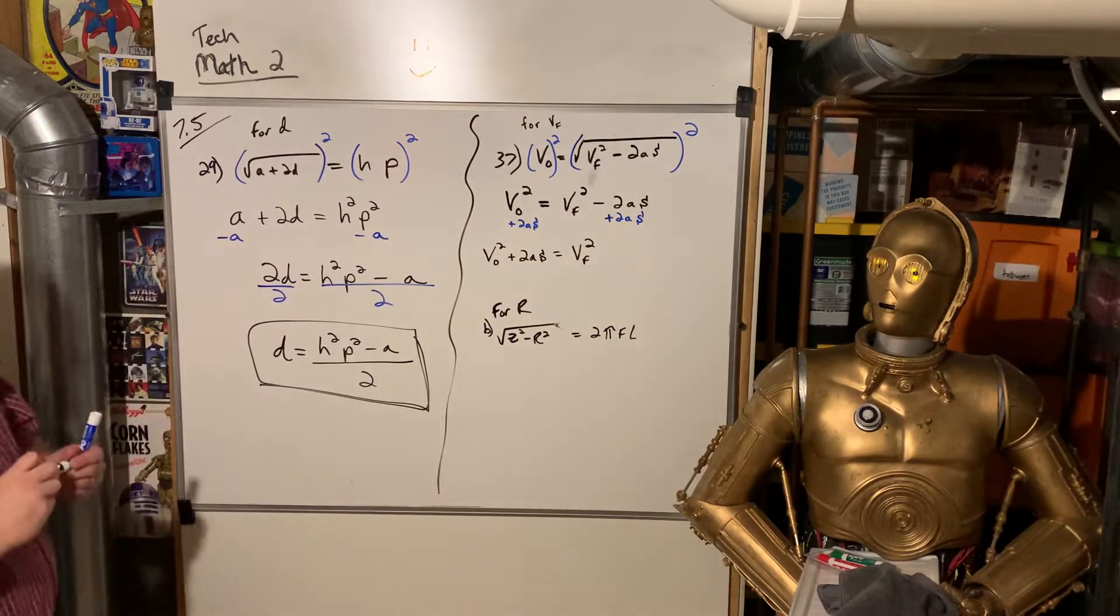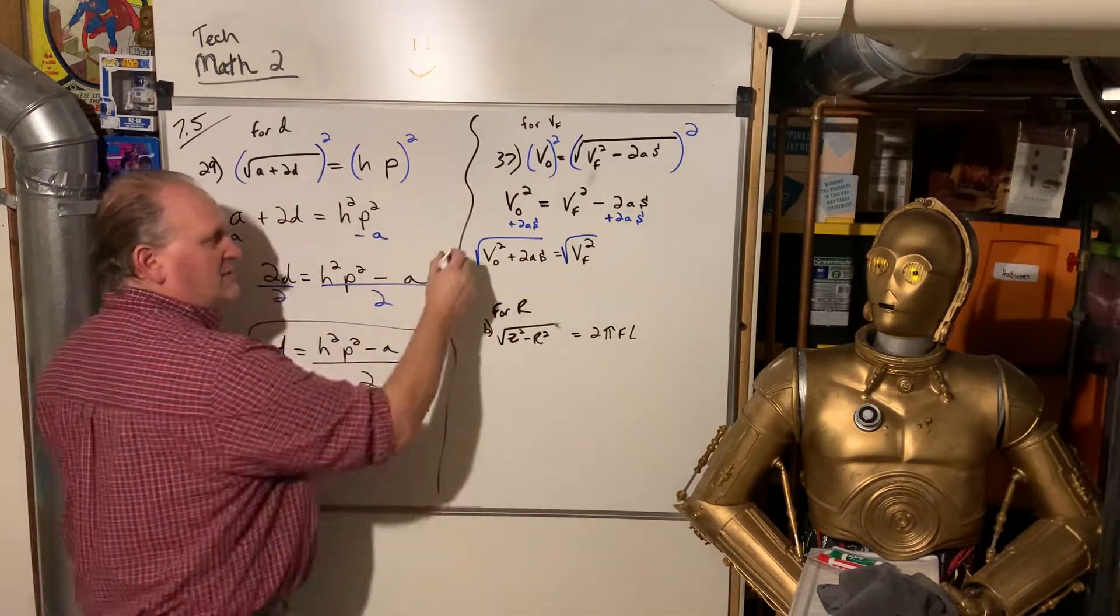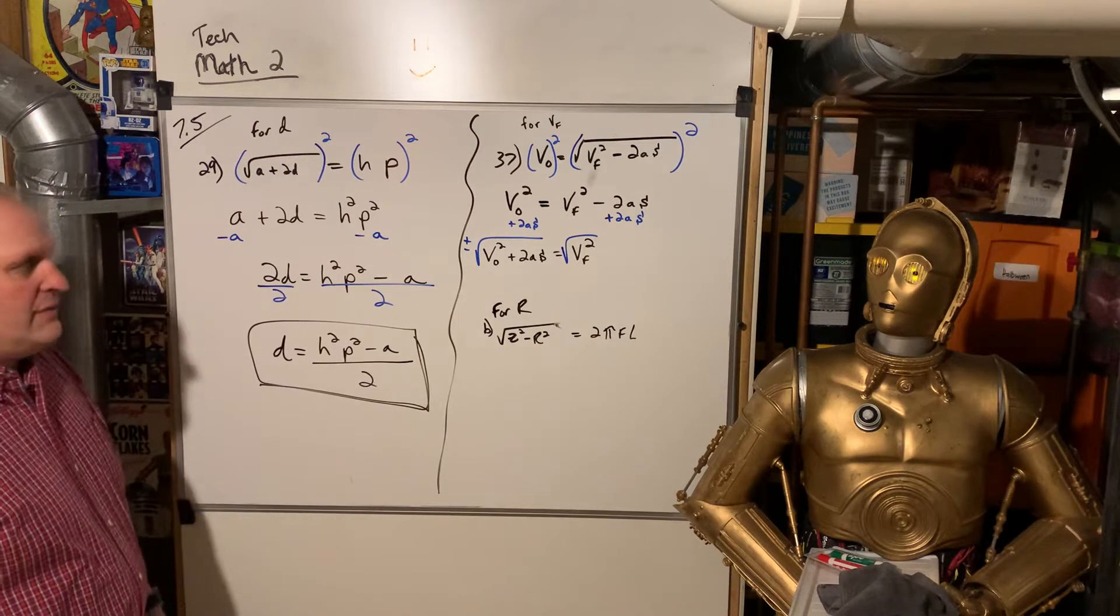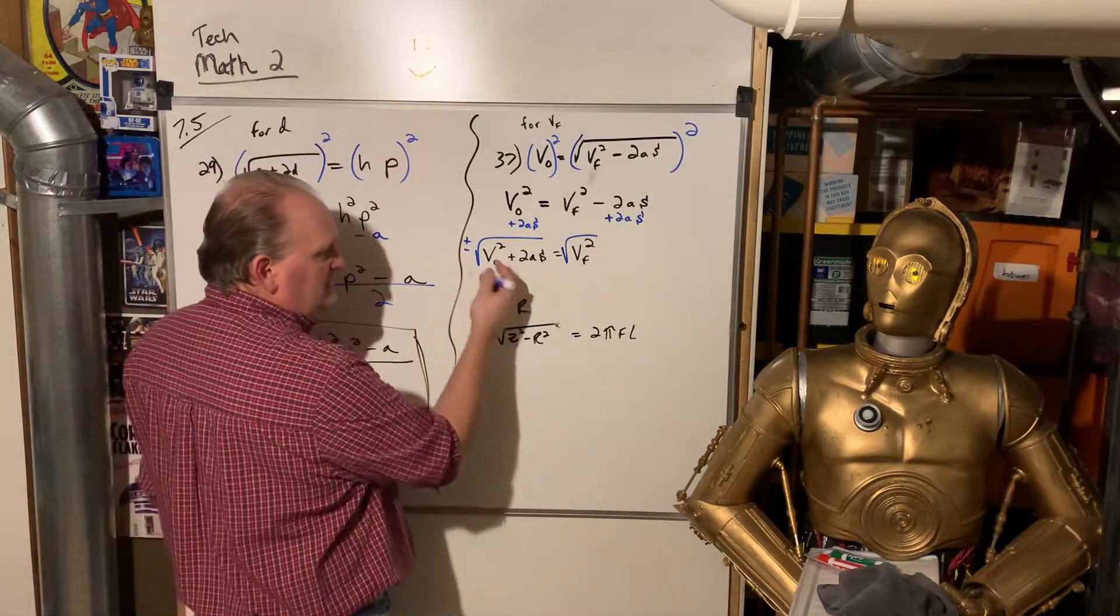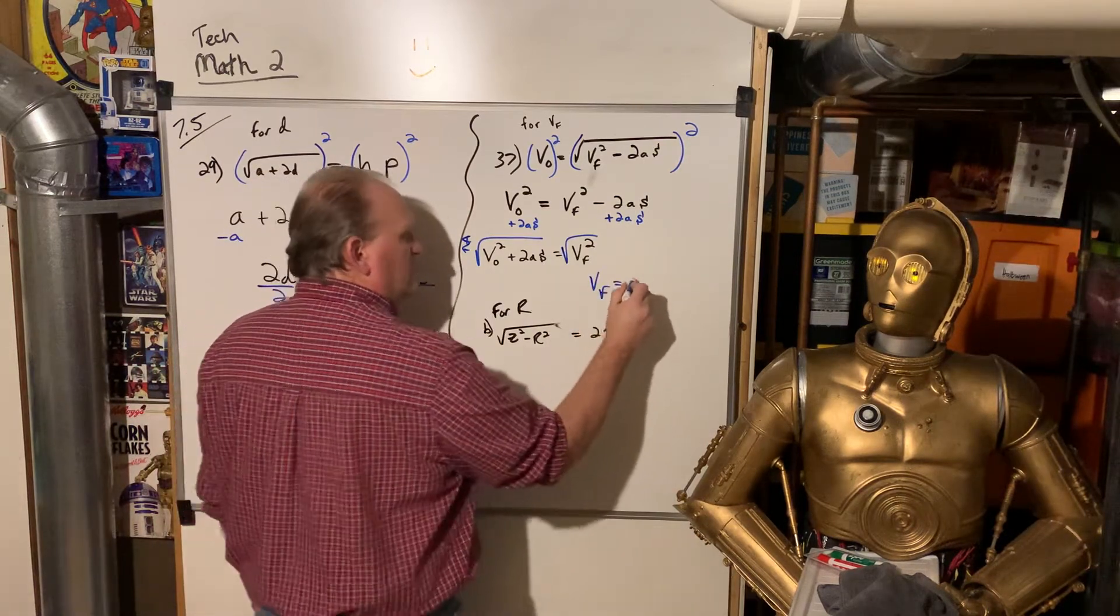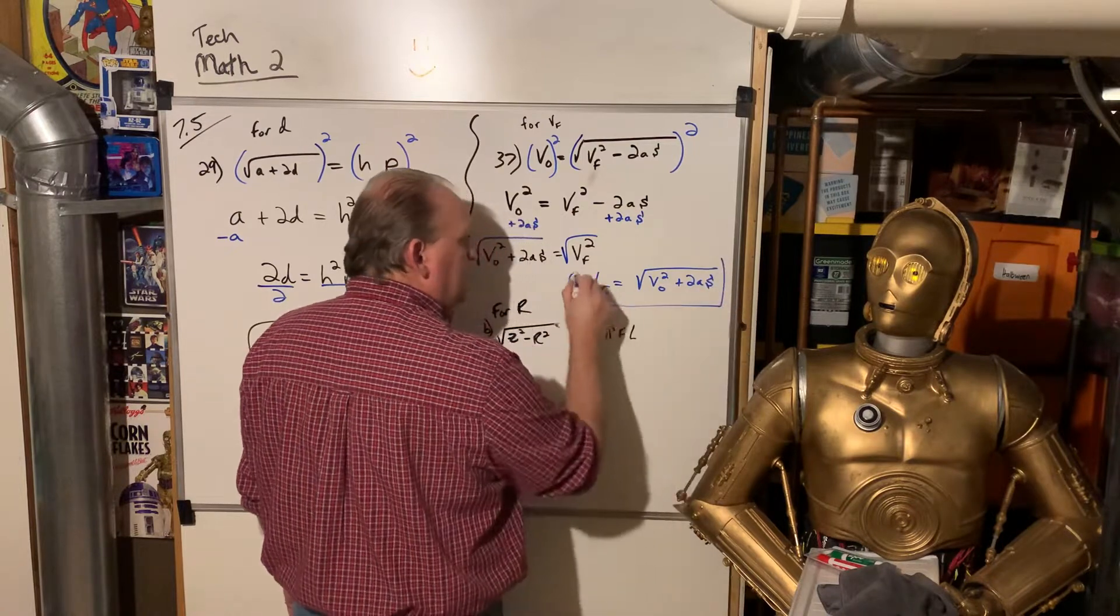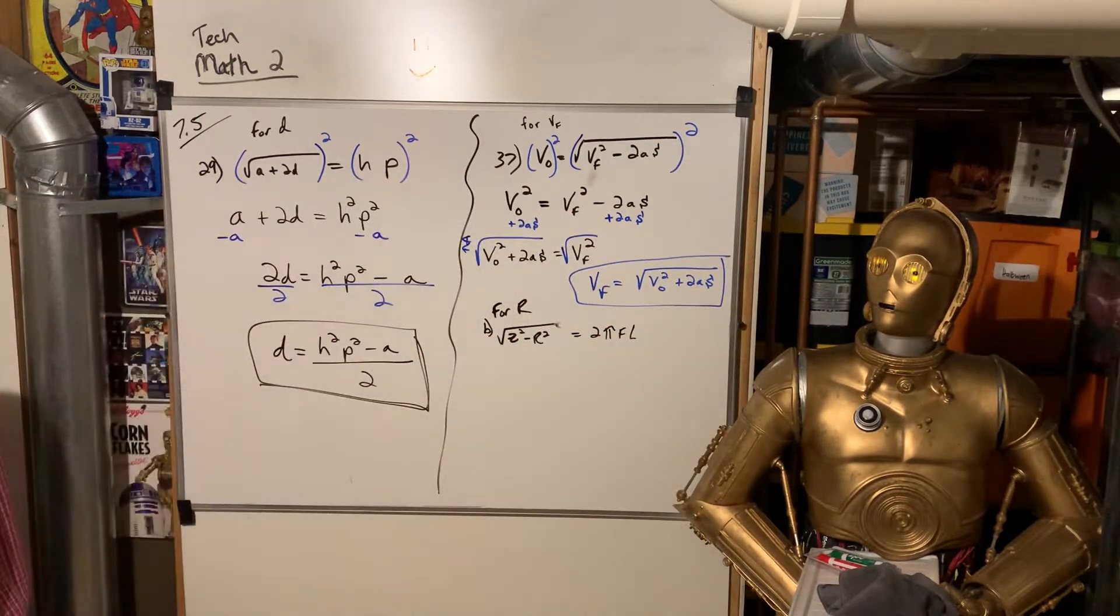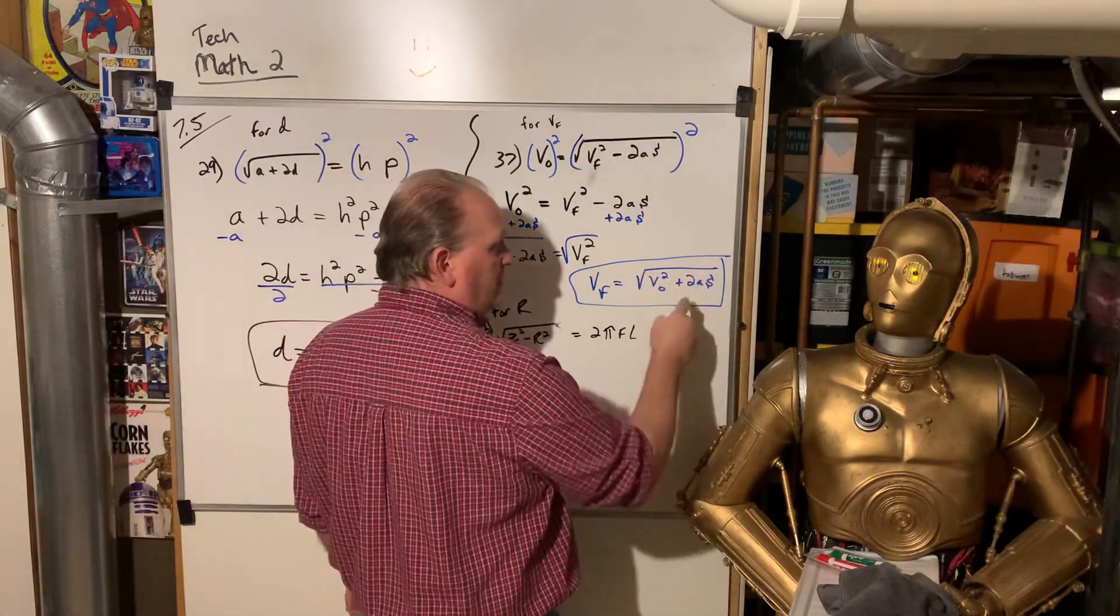So now we have V naught squared plus 2AS is equal to V sub F squared. We don't want that squared on there. So we're going to take the square root of both sides. Officially, algebraically, there's a plus or minus here. Once in a while, I'll put it there. Mostly I don't because we're going to cancel it out anyway because this has to be a positive value.